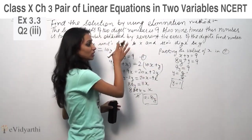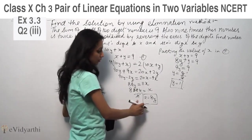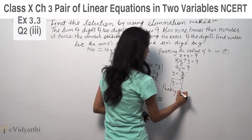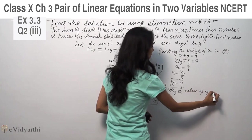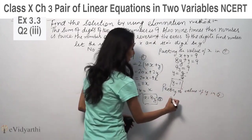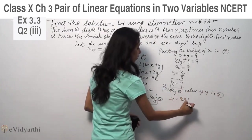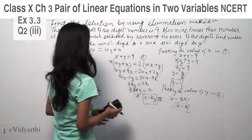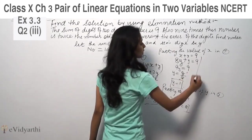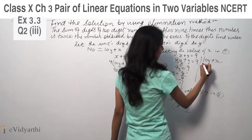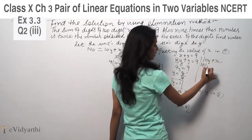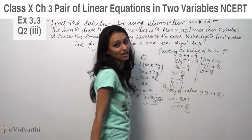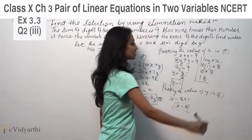If y value is 1, then x value can be found. Putting the value of y in the third equation. So x is equal to 8 into 1, x is equal to 8. The last step is to find out the number. Our number is 10y plus x. So 10 times y value is 1, plus x value is 8. So 10 plus 8, this is 18. 18 is the number.